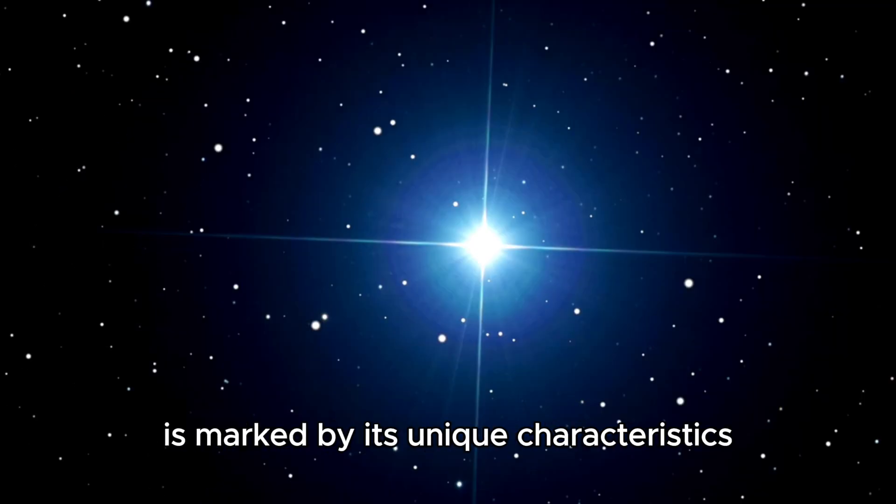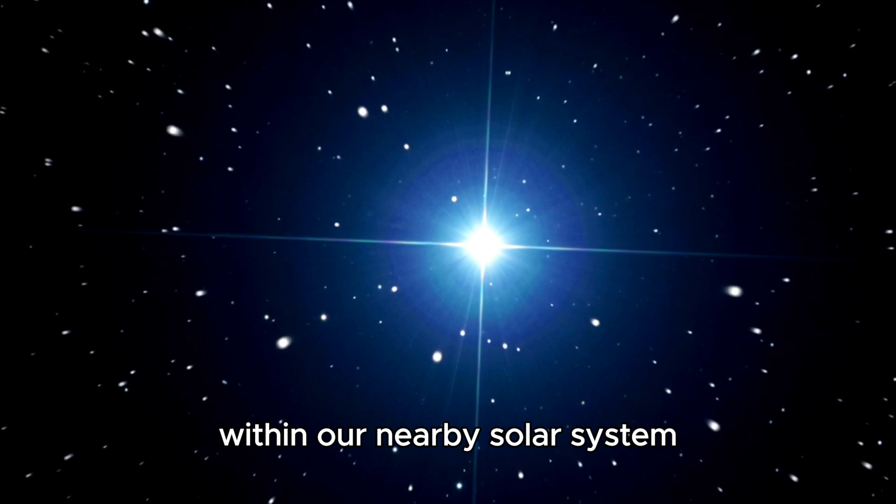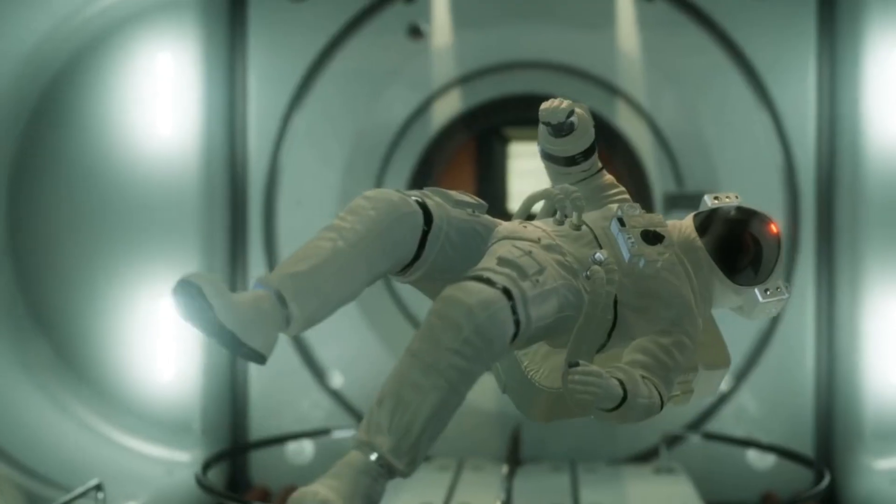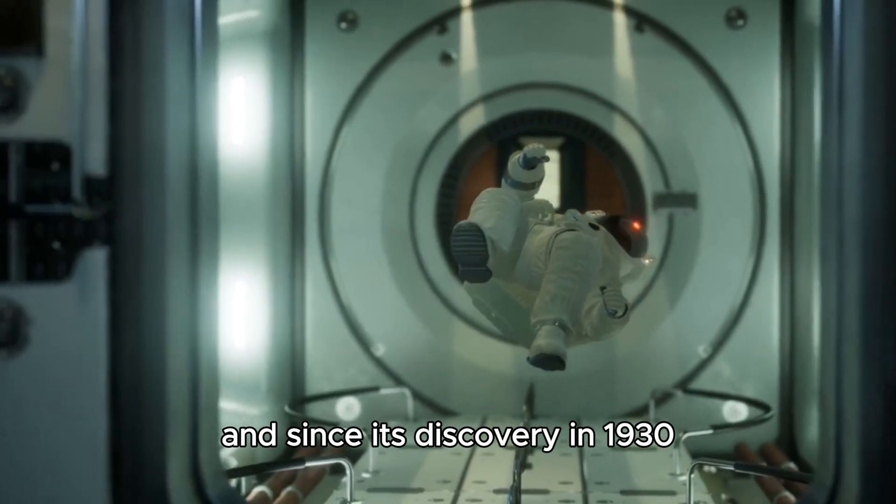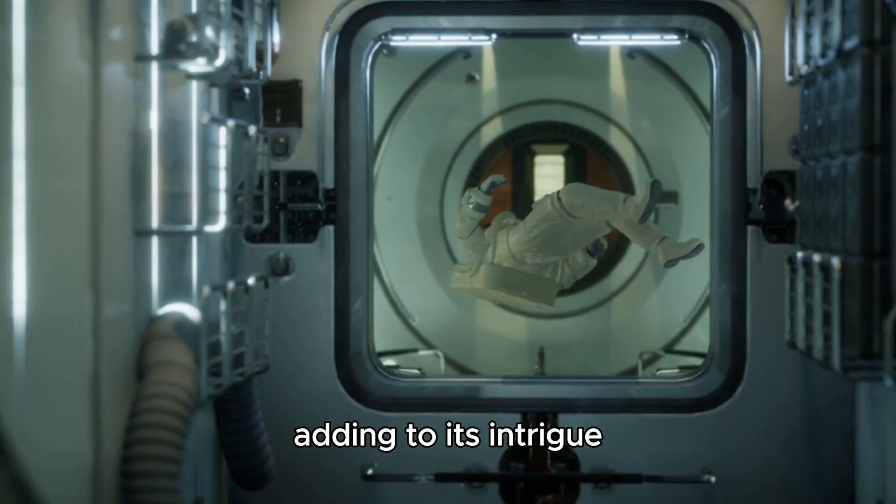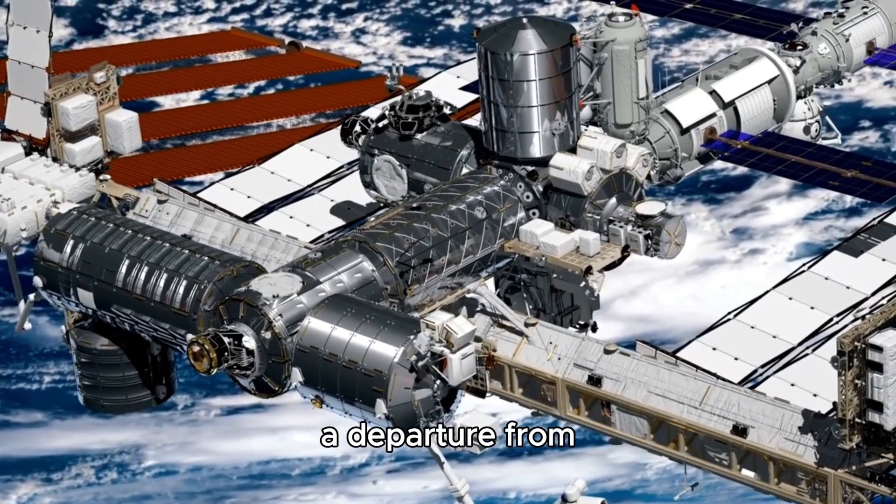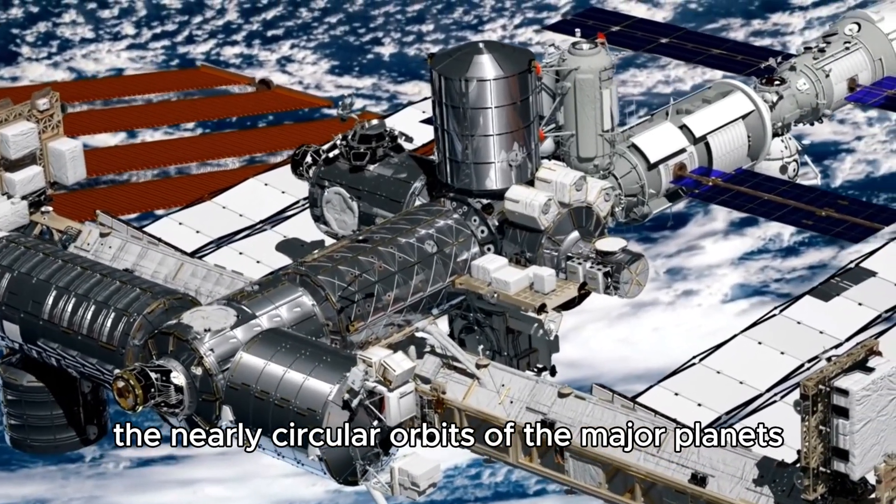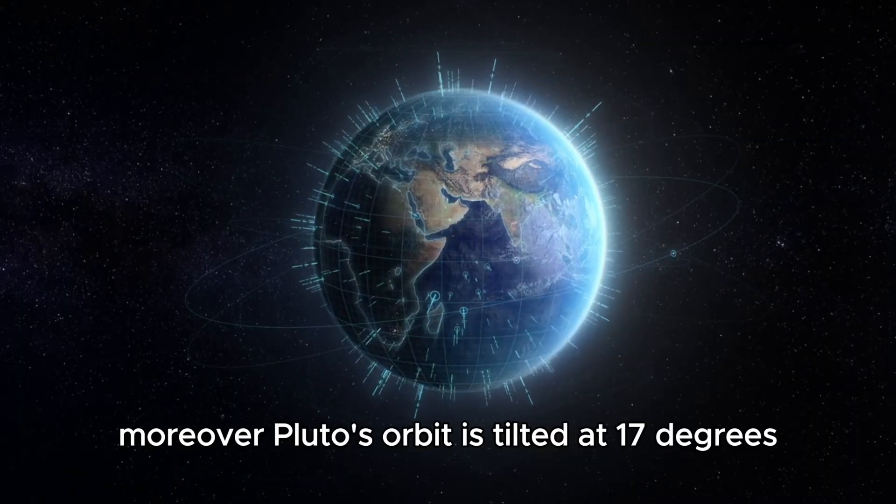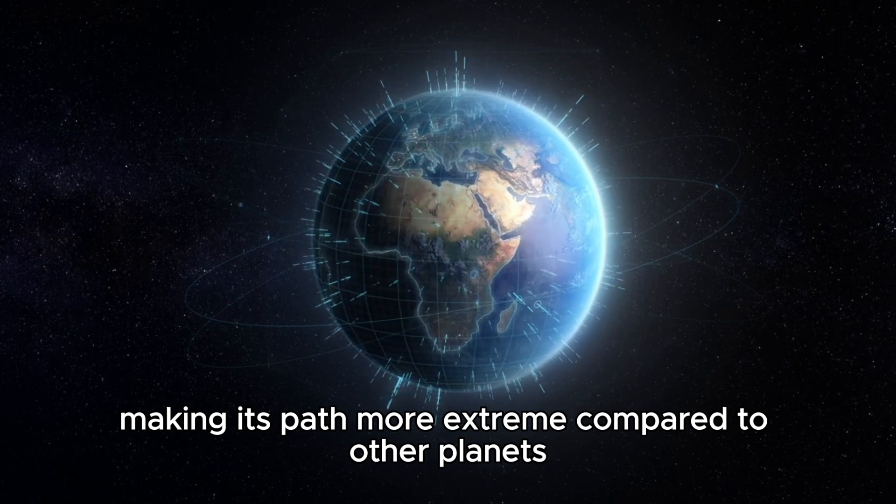Pluto's journey around the Sun is marked by its unique characteristics within our nearby solar system. Its orbit spans an impressive 248 years, and since its discovery in 1930, Pluto has yet to complete a full revolution. Adding to its intrigue is the exceptionally elongated shape of its orbit, a departure from the nearly circular orbits of the major planets. Moreover, Pluto's orbit is tilted at 17 degrees to the ecliptic plane, making its path more extreme compared to other planets.